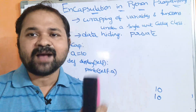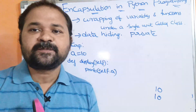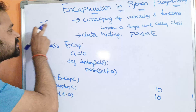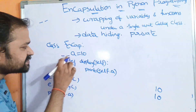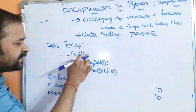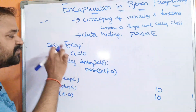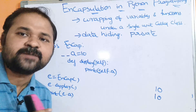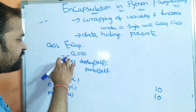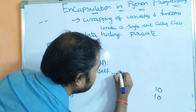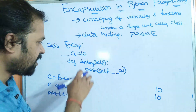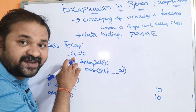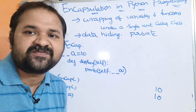Now, in order to provide data hiding, we have to use the private access specifier. But Python doesn't support private access specifier directly. If we want to make a variable or a function as private, we must use two underscore symbols. So, underscore underscore a is equal to 10 — now this a will become the private variable. We know that we can access the private variable only inside the class. From outside the class, it is not possible to access the private variable. The private variables are accessible by public functions of the same class.